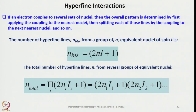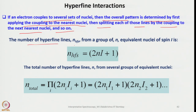Hyperfine splitting happens because of hyperfine interaction. If an electron couples to several sets of nuclei, then the overall pattern is determined by first applying the coupling to the nearest nuclei and then splitting each of the lines by the coupling to the next nearest nuclei, and so on. This is very similar to what we do while writing a splitting tree or coupling interaction tree in NMR. The number of hyperfine lines from a group of N equivalent nuclei of spin i is given by 2Ni+1.